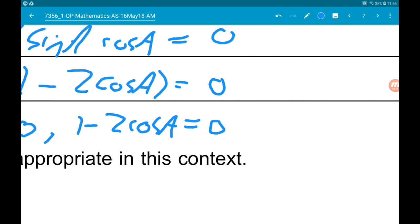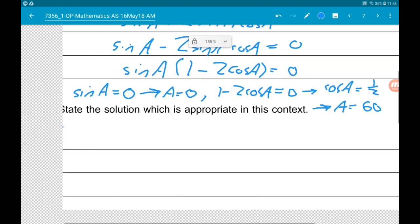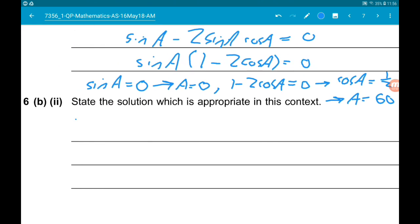So if we added 2 cos of A to both sides, we would get 1 is equal to 2 cos of A. So divided by 2 would give us cos of A is equal to 1 half. So A is equal to 60 degrees. So our two solutions are 0 and 60.